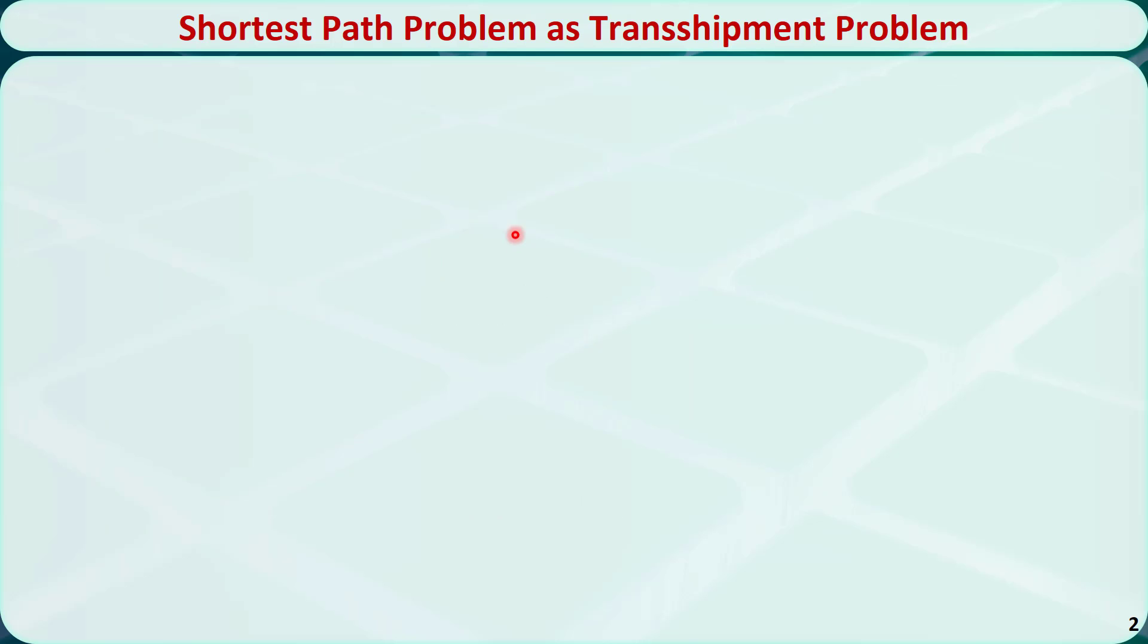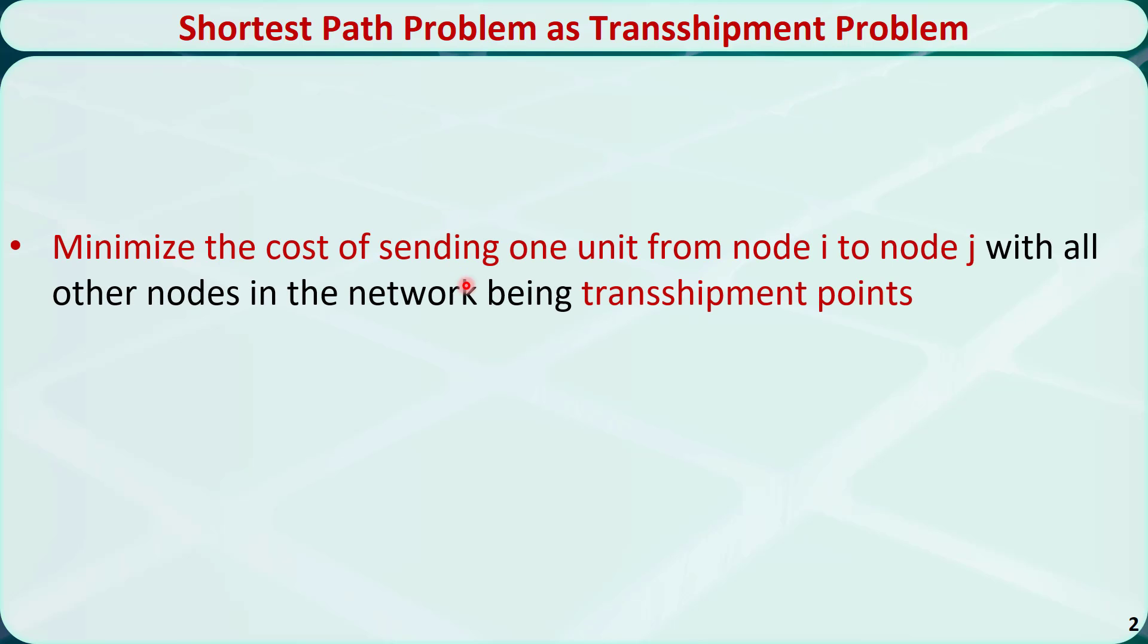The problem of finding the path with the minimum length from node i to node j in the network is called a shortest path problem. The shortest path problem is equivalent to minimizing the cost of sending one unit from node i to node j with all other nodes in the network being transshipment points.